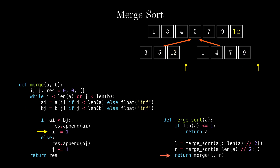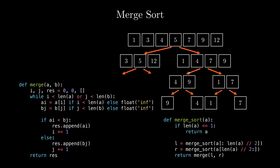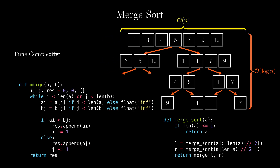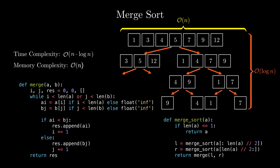Let's analyze the time and memory complexity of MergeSort. Since we halve the array on each step, there are at most log n recursive halving operations. At each level of the branching tree, there are at most n elements, and since the merge function has linear time complexity, the total time per level is O(n). Therefore, the time complexity across all log n levels is O(n log n). For space complexity, the merge function stores results in a new array, requiring O(n) additional memory per level. Since that memory can be reused across recursive calls, we never utilize more than O(n) memory at any time, giving a total space complexity of O(n).